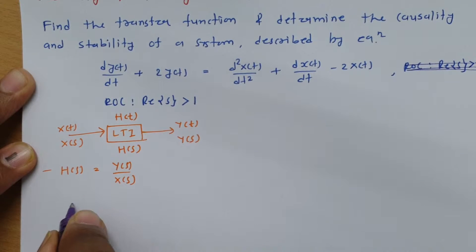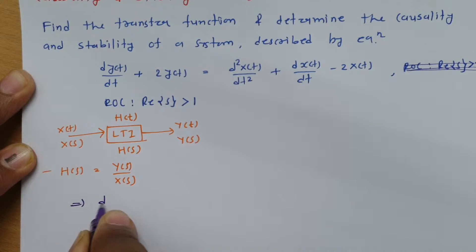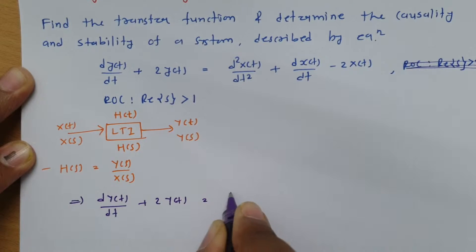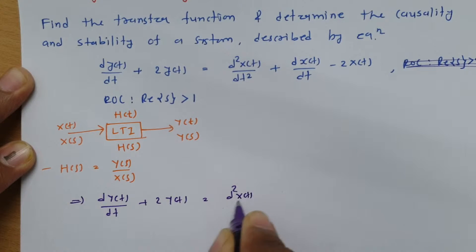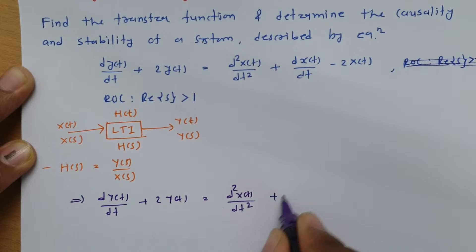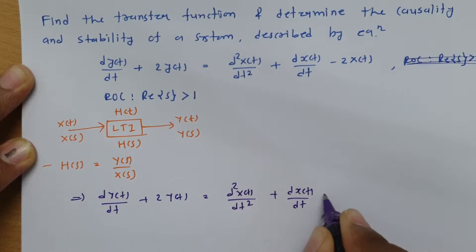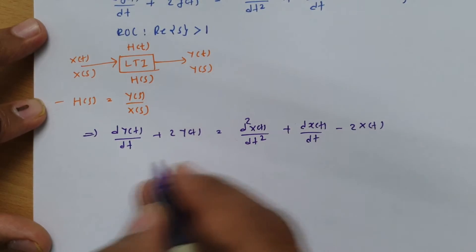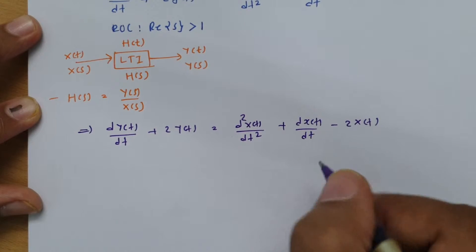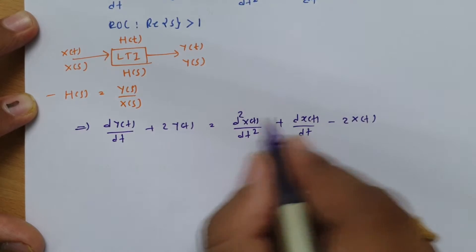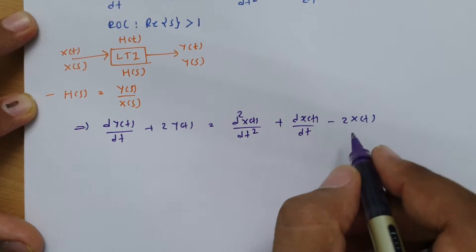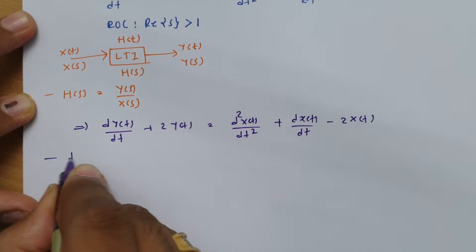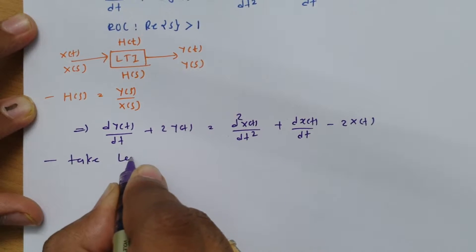First, let me write the differential equation: dy(t)/dt + 2y(t) = d²x(t)/dt² + dx(t)/dt − 2x(t). If I take the Laplace transform of this, I can express the equation in terms of Y(s) and X(s), and by taking the ratio Y(s)/X(s) we can find the transfer function. So, take the Laplace transform.